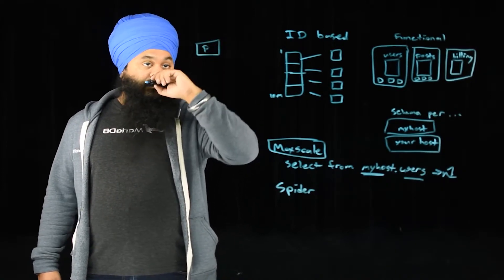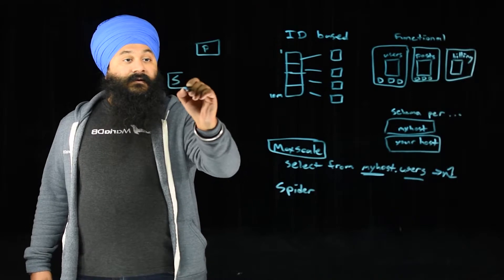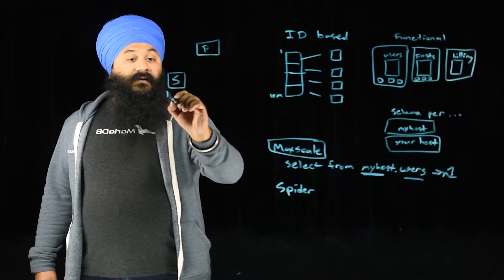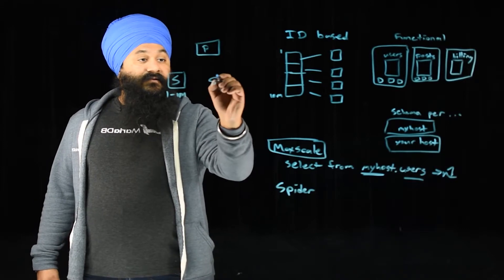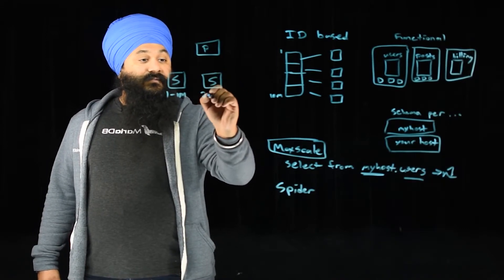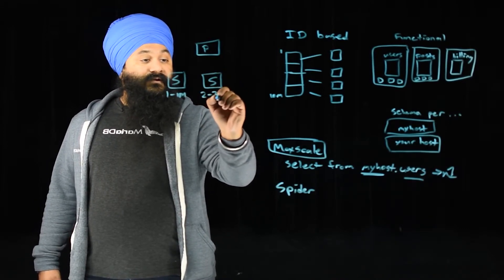So what you would do is you would build out a Spider node. So let's say this is your primary database. You'll build out another Spider node for IDs one through one million. And then another Spider node for IDs two million through three million.